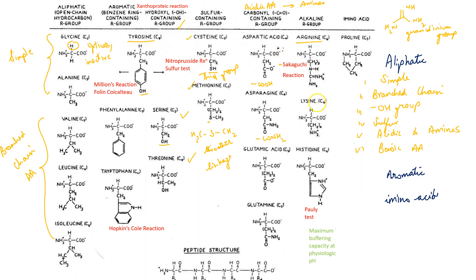Lysine is another alkaline amino acid which is very important for the synthesis of carnitine. The pKa of histidine, due to the presence of the imidazole ring, is very similar to the normal physiologic pH of the body, which is why histidine has the maximum buffering capacity at physiologic pH. Because of the presence of the imidazole ring, it is specific for the Pauly's test.